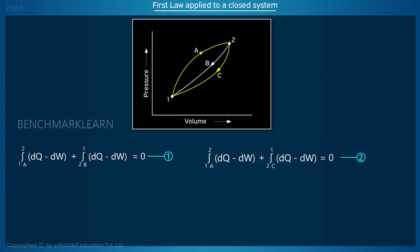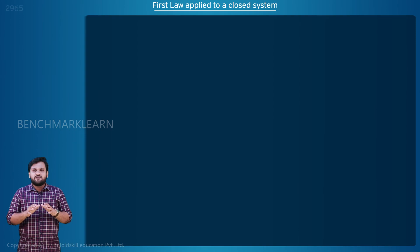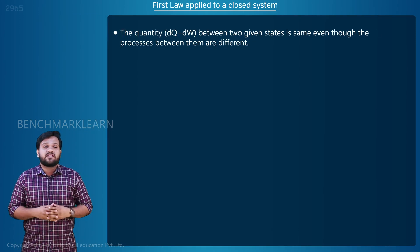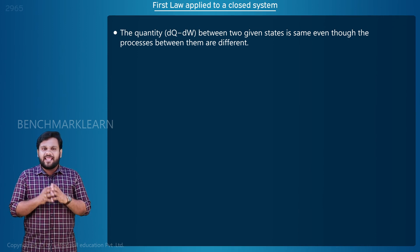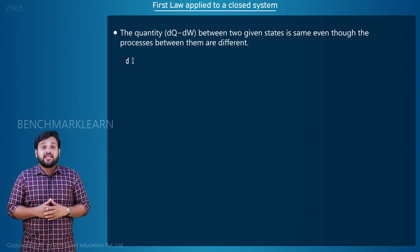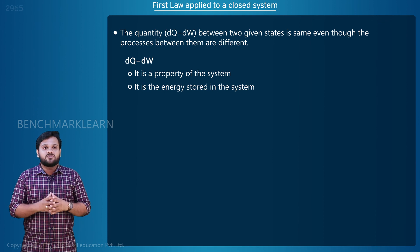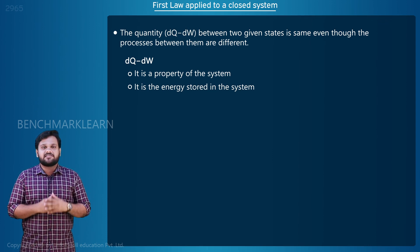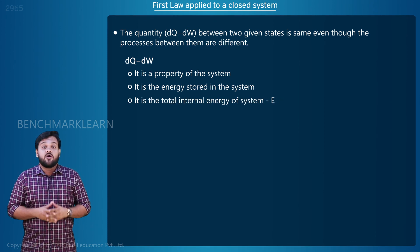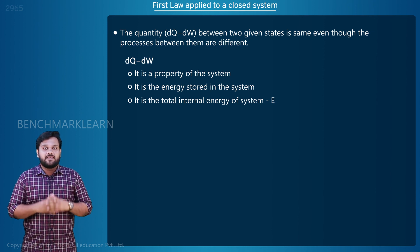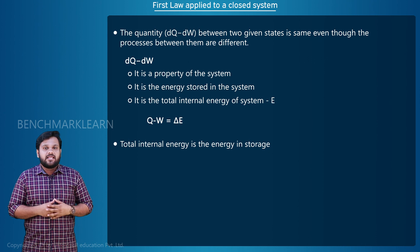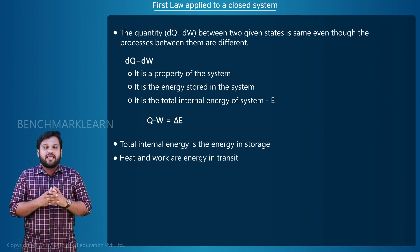From equations 1 and 2, we find that the integral from 2 to 1 of (dQ minus dW) through path B is equal to the integral from 2 to 1 of (dQ minus dW) through path C. Here we can see that whatever be the path followed by the process, the quantity dQ minus dW is the same. Its value depends on the end states and not on the path followed, and hence it is a property of the system. This property is the energy stored in the system, given the name total internal energy, or simply energy of the system, denoted by E. So Q minus W equals delta E. The total internal energy is the energy in storage, whereas heat and work are energy in transit.